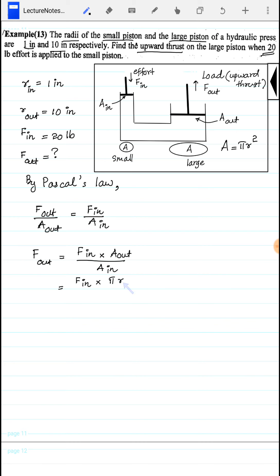F_out equals F_in times pi r_out squared over pi r_in squared. The pi cancels out, giving F_in times r_out squared over r_in squared.